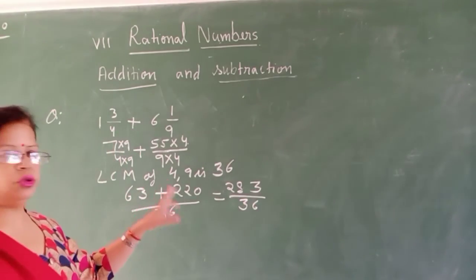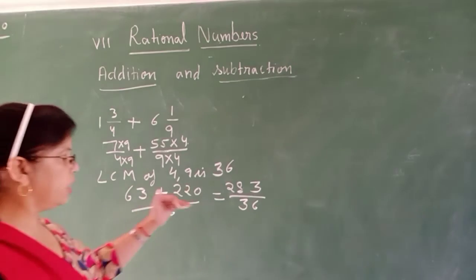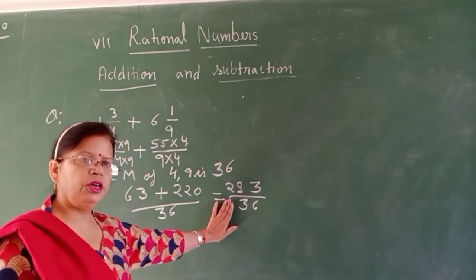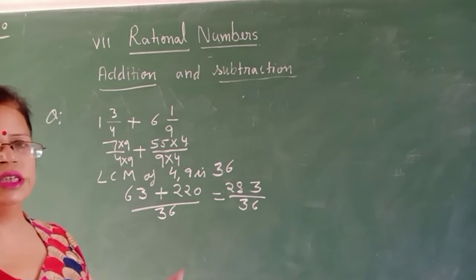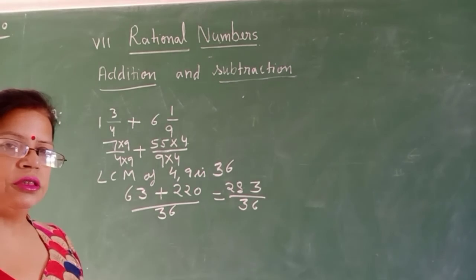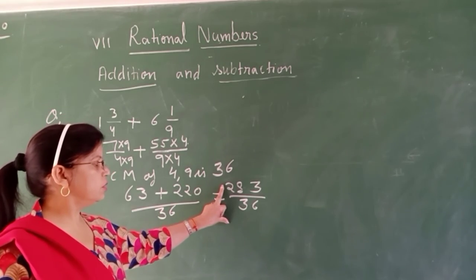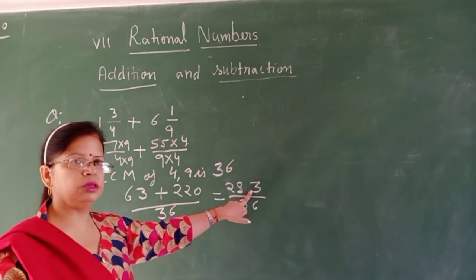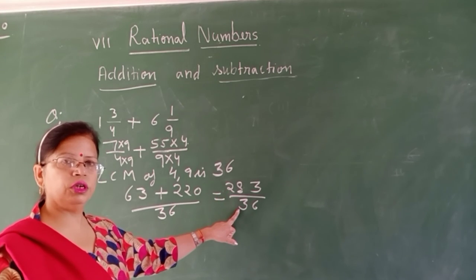Now check whether you can cancel by any number. If it cannot be cancelled, then it's your final answer. If you can cancel by any number, you may do so. But after observing, you will check. 283 cannot be divided by any number. So final answer is 283 over 36.